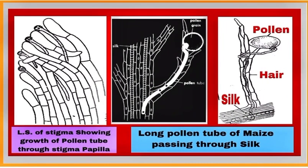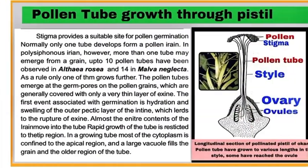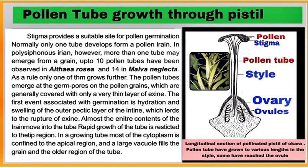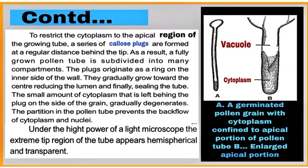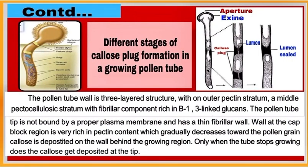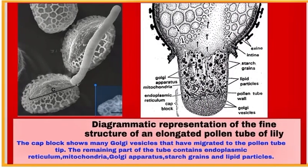Paste pictures. Write about pollen tube growth through the pistil in detail. In a growing pollen tube, most of the cytoplasm is confined to the apical region. To restrict the cytoplasm to the apical region of the pollen tube, callous plugs are formed. Here is a picture showing different stages of callous plug formation in a growing pollen tube. Paste more pictures.